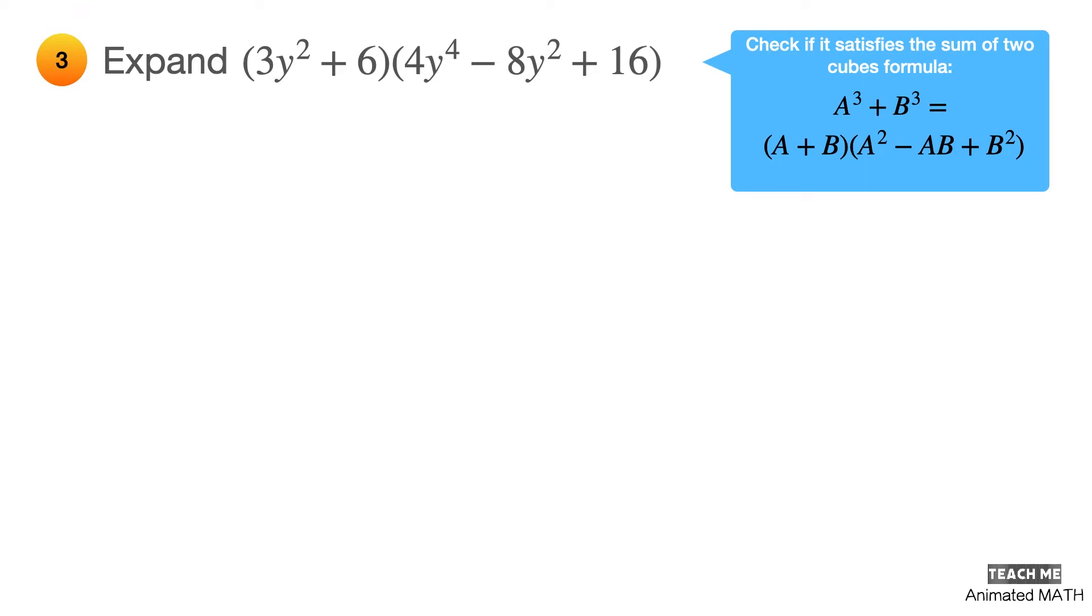Let's try it again. But first, let's factor out 3 from the binomial and factor out 4 from the trinomial. Now, assume that a is equal to y squared and b is equal to 2.